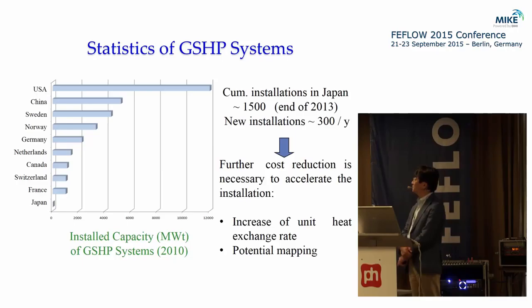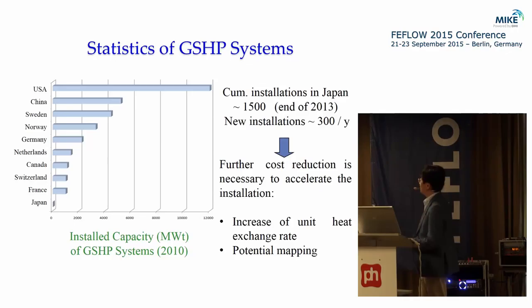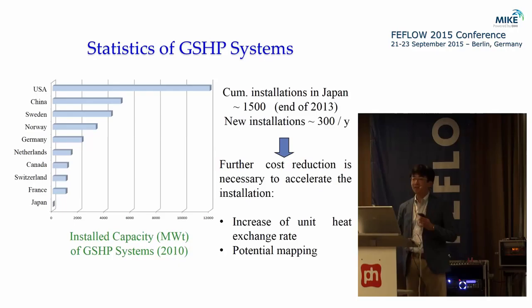This figure shows the current statistics of GSHP system distribution. The system is quite well distributed in European and American countries, but the installation in Japan is very, very few as of 2010. Recently, the annual number of installations is 300 systems per year, so it's kind of increasing. Because everybody knows the system is environmentally friendly and energy efficient, it's quite important to promote the distribution.